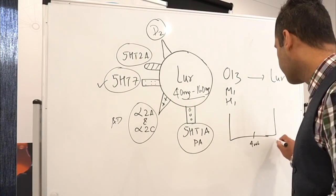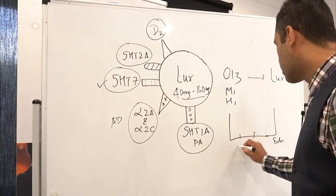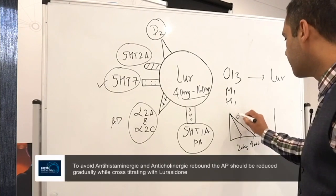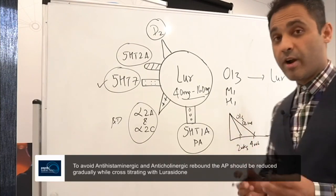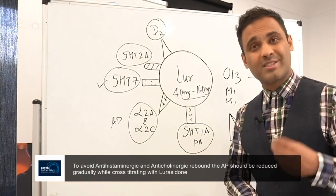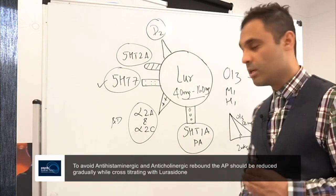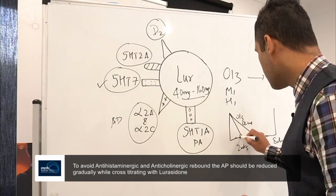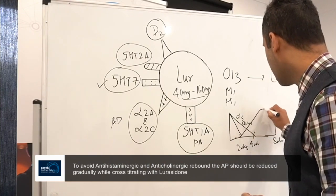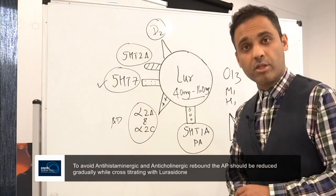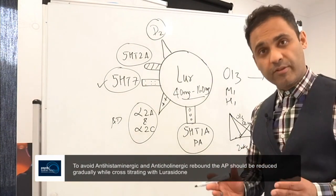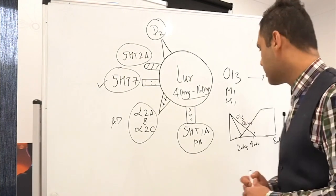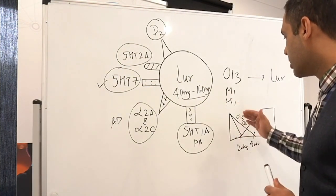Therefore, the key principle to minimize anticholinergic and anti-histaminergic rebound is go slow when reducing the agent. And if we look at four weeks here and two weeks, you may want to consider the reduction somewhere like this of the olanzapine or the quetiapine. And this is very individual. The clinician may reduce the dose 10 to 25% just gradually, whilst introducing the other agent gradually. Different patients, in my experience, require different regimes.